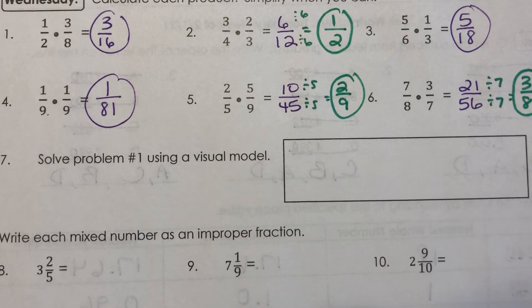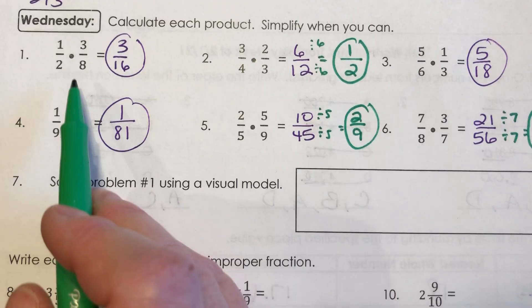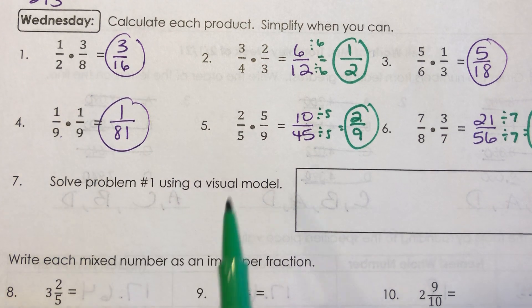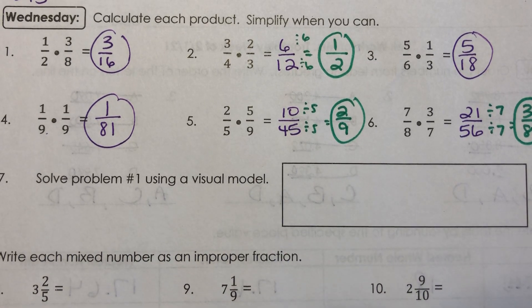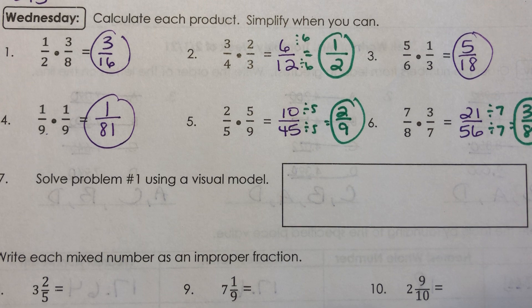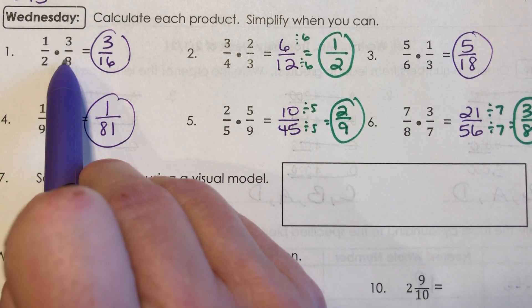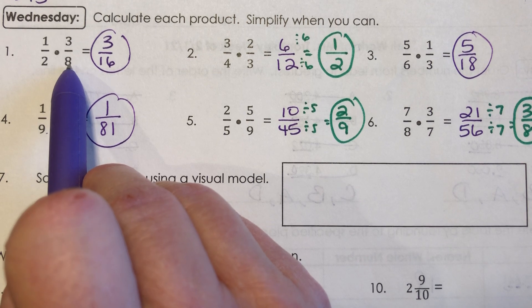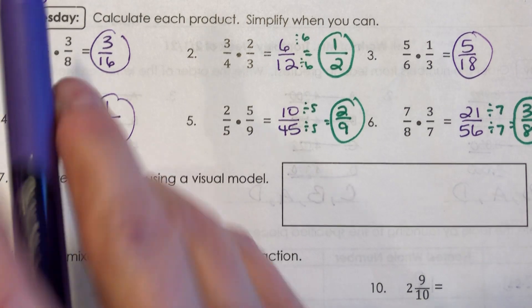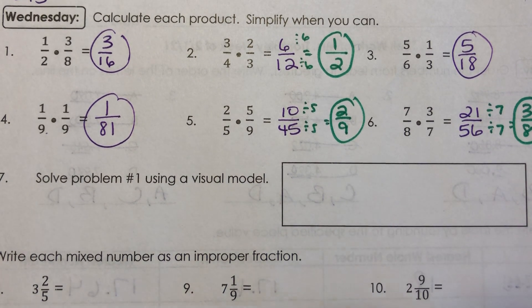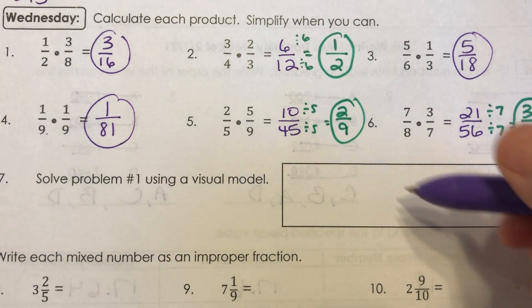Now for number 7, it says to solve problem number 1, this 1 half times 3 eighths, using a visual model because we do have to understand this visual model. So let's do that. If I want to take half of 3 eighths, that means the first thing I need to do is put 3 eighths on here. That means I need to cut this up into 8 pieces.